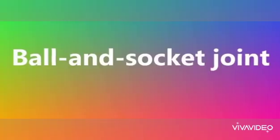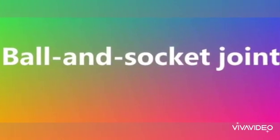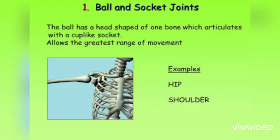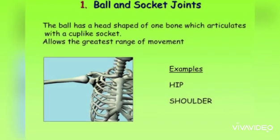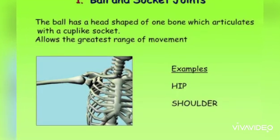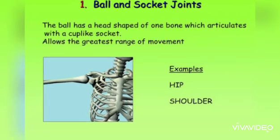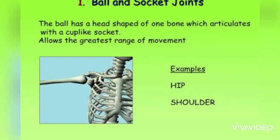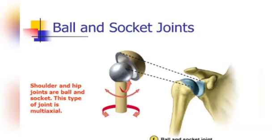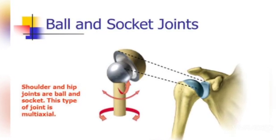Let's start with the ball and socket joint. In this joint, the ball-shaped end of one bone fits into the cup-shaped socket of the other bone. This allows the bone to move in almost any direction. The shoulder joints as well as the hip joints are examples of ball and socket joints.